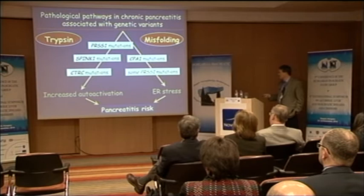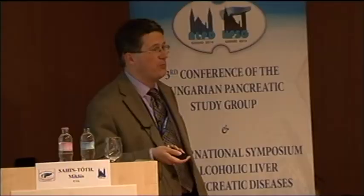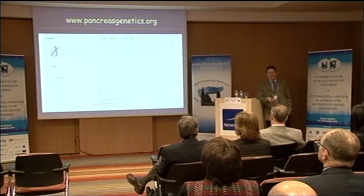We do maintain a website — Balazs is helping with it — where we list the different risk genes. If you click on any of these genes you can see all the variations ever published. The value of this website is really as a complete citation resource for any of the mutations, which for some like N34S is quite a task to collect.